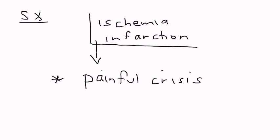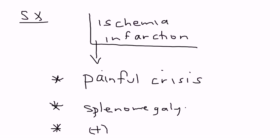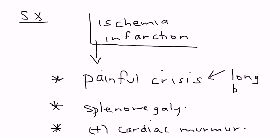Other things that can happen include splenomegaly, which is enlargement of the spleen. The spleen is essentially overwhelmed by these sickle-shaped red blood cells, which can eventually cause the spleen to enlarge. Another thing that can happen because of poor blood flow is that you'll detect a cardiac murmur on a heart exam. Most importantly, painful crisis is the key symptom. The pain is most commonly in the long bones and can also present with pain in the joints.